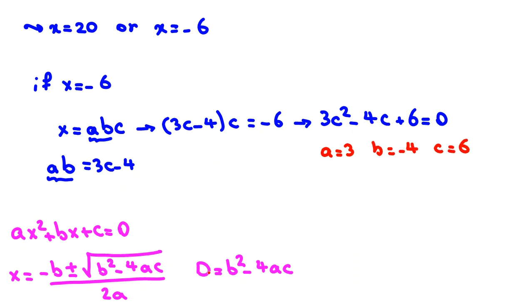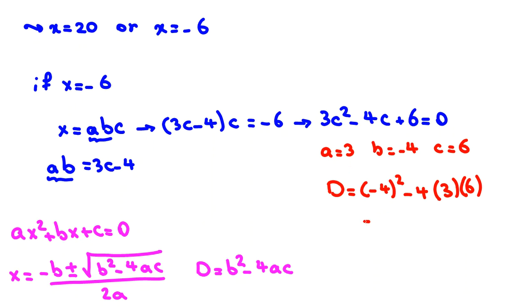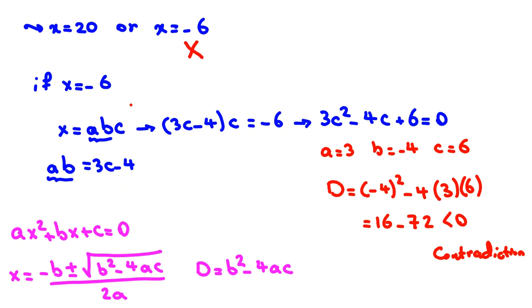The discriminant is b² - 4ac = (-4)² - 4(3)(6) = 16 - 72 = -56, which is less than zero. Since a, b, c, d must be real numbers, the discriminant must be at least zero. This is a contradiction, so we reject x = -6 and focus on x = 20.